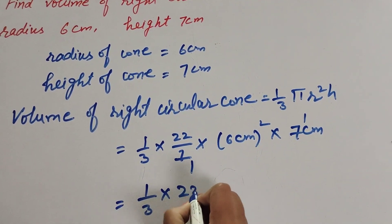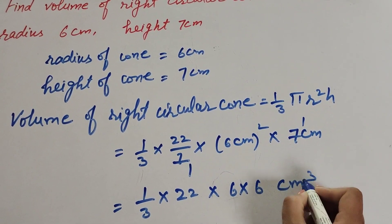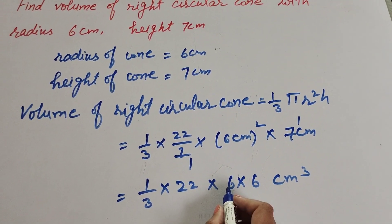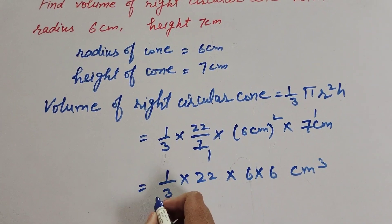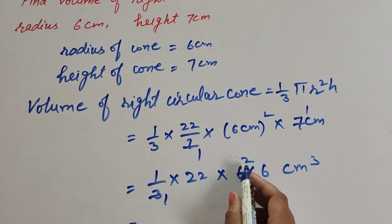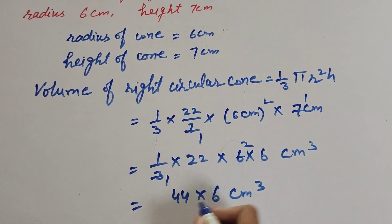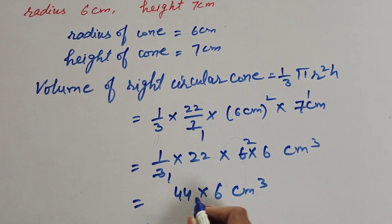equal to 1/3 × 22 × 6 × 6 centimeters cubed. 6 in numerator and 3 in denominator both cancel. 22 multiplied by 2 equals 44, times 6 centimeters cubed. 44 multiplied by 6